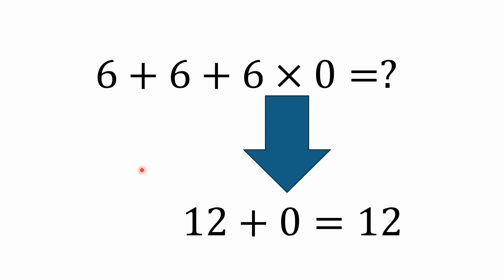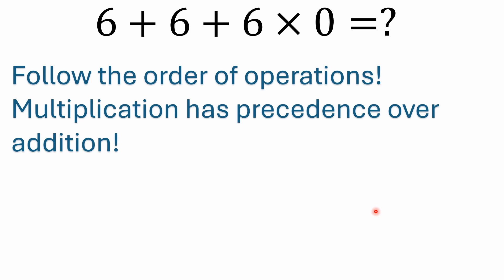Regardless, multiplication has precedence over addition. So even though you have multiplication at the end, 6 times 0 is solved first. 6 times 0 is 0. 12 plus 0 is 12. So the correct answer to the problem is 12. All you have to do is follow the order of operations — multiplication has precedence over addition.